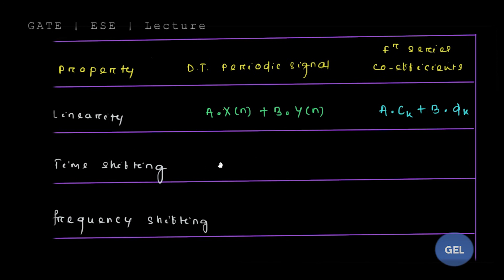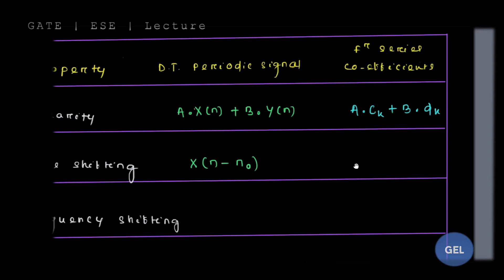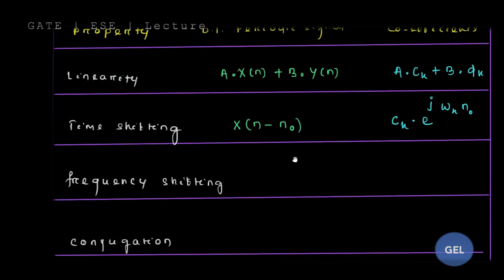For the time shifting property — very important — if your signal is shifted by n₀, then CK will be affected by an extra complex exponential factor. The shifted signal x(n − n₀) corresponds to CK multiplied by e^(−jω₀·k·n₀). That means one extra complex exponential factor gets multiplied to CK.